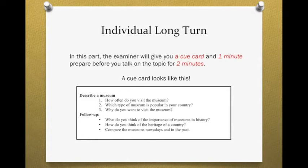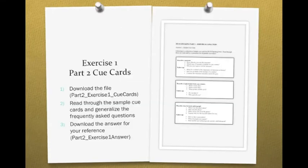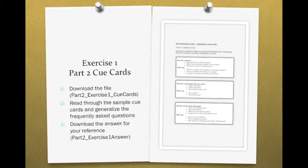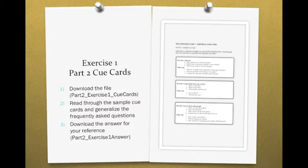到目前为止同学们已经了解了在Part 2 individual long turn你应该要做些什么task。等到我们所有的讲解都讲解完之后，请同学们去做第一个exercise。请你去下载的档案是Part 2 Exercise 1 Cue Cards，上面你会看到不同的cue cards，这些都是在IELTS口说里面常常会被考到的题目。请你就着这些题目自己去练习，练习完了之后你可以下载答案，档名叫做Part 2 Exercise 1 Answer。Face老师有帮大家整理你大概可以讲的方向和可以准备的重点。